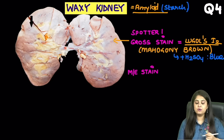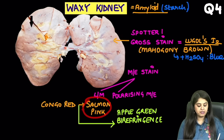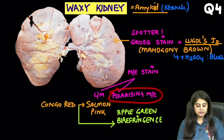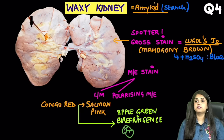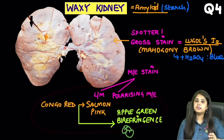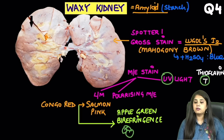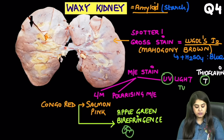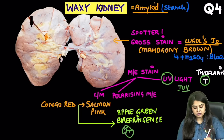Coming back to the microscopic stain — Congo red. When you put Congo red and visualise under a light microscope, you get a salmon pink colour. Under a polarising microscope, you get the classical apple green birefringence. Another PYQ asks if there is any other microscopic stain: if using UV light, you use thioflavin T — remember T for TUV, so the UV light stain is thioflavin T. Question 4 is also done.